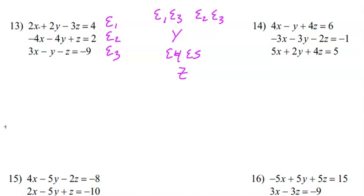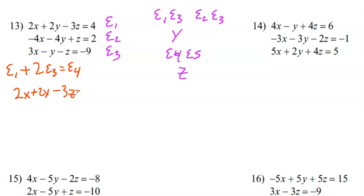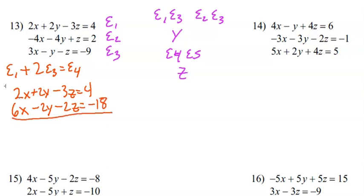For E1 and E3, to get rid of Y, we'll multiply the third equation by 2 because 2Y minus 2Y equals 0Y. So E1 plus 2·E3 equals E4. We copy E1 down, then 2 times each E3 term: 2 times 3X is 6X, 2 times negative Y is negative 2Y, 2 times negative Z is negative 2Z, and 2 times negative 9 is negative 18. Combining the two equations gives 8X minus 5Z equals negative 14 — that's E4.